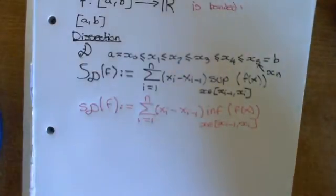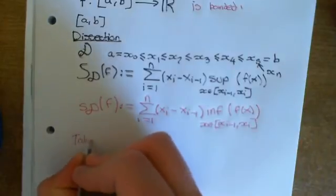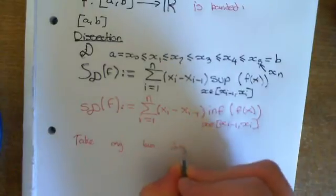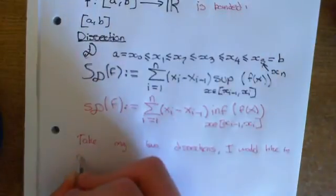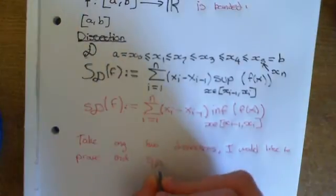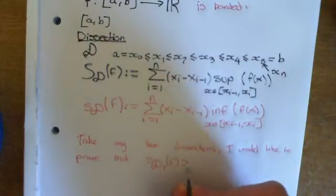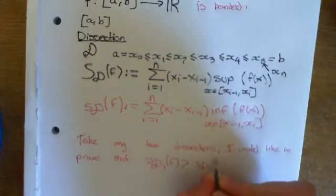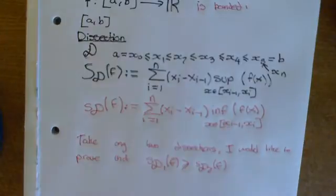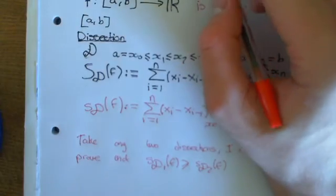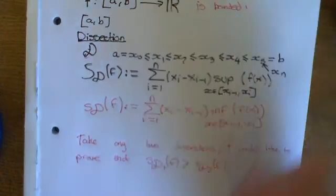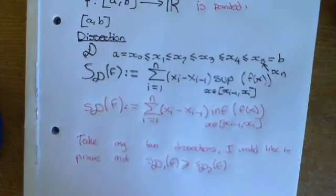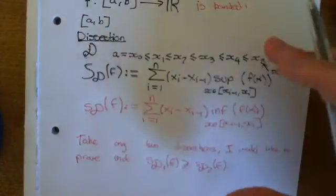Now, I want to prove that if you take any two dissections, the upper Riemann sum over D₁ of f is greater than or equal to the lower Riemann sum over D₂. No matter what dissections you pick, every possible lower Riemann sum you could ever come up with is less than any upper Riemann sum. That's pretty obvious from the picture — an upper Riemann sum is always greater than the area, and a lower Riemann sum is always less. But we need a rigorous proof, because we can't rely on the picture; we have to work purely with the symbolic formalism.